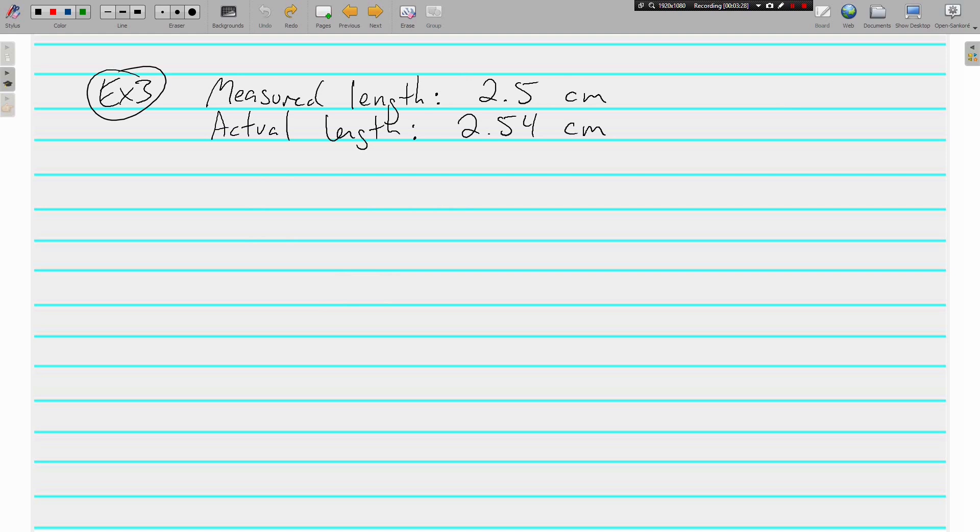The difference between the two, the error, how much were they off by? Well, 2.54 minus 2.5 is only 0.04 off. So the error is very small. 0.04 divided by the actual length, 2.54. If you put that in the calculator, you get 0.016. Times 100 moves the decimal twice, which means the error was only 1.6%. That's not too bad. That's a very, very small percent error.